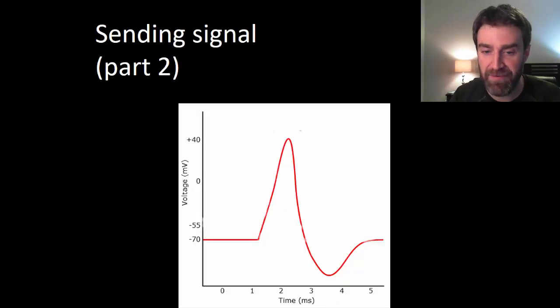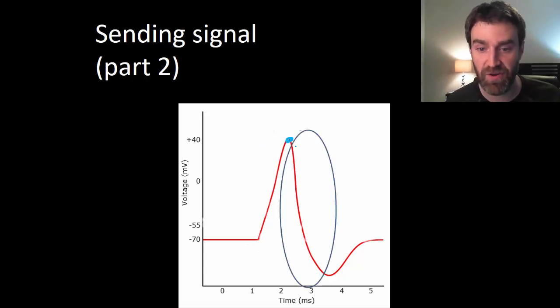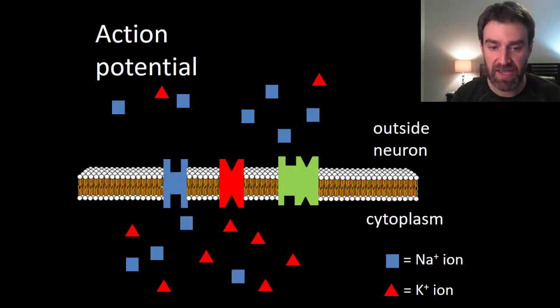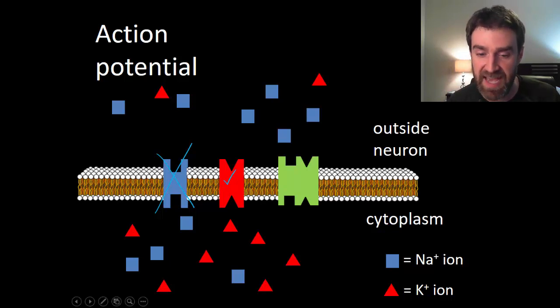So on the graph, remember that all that positive sodium coming in has led us to this point right here. This is where all the sodium channels close, and this is also the point where the potassium channels open. Those potassium channels are also voltage-gated, and so they're waiting for the point where it reaches that positive voltage inside. And so in our little picture here, the sodium channels are closed, the potassium channels are now open, and now potassium has a chance to diffuse down its electrochemical gradient.